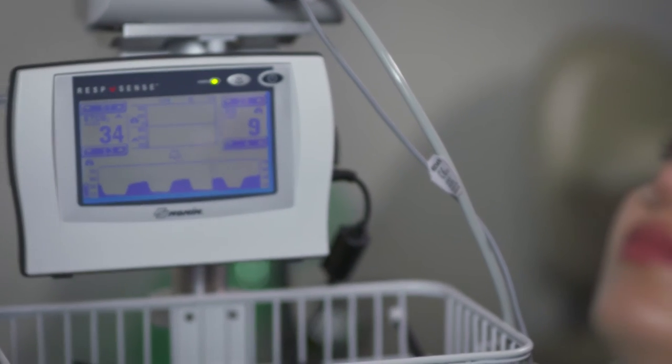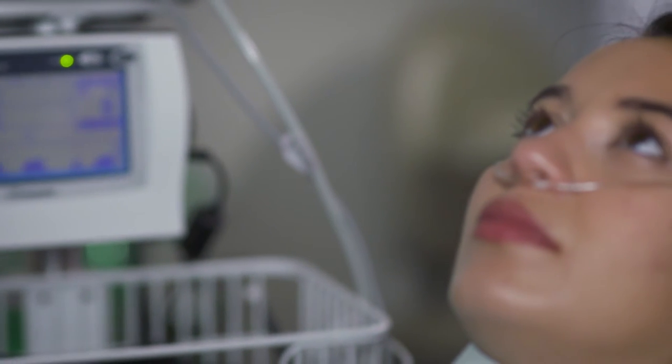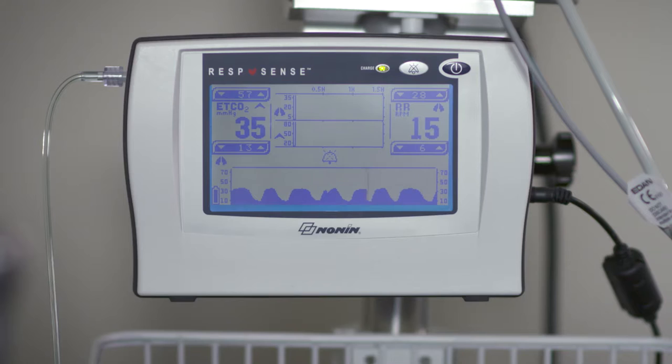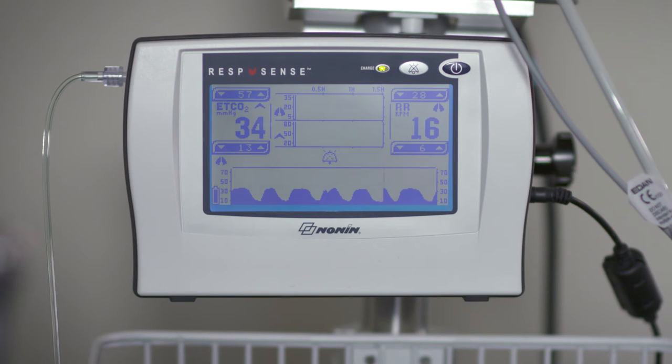Capnography works by sampling exhaled air through a small tube such as a cannula or a sample line during a procedure. The amount of CO2 in the exhaled breath is analyzed by the monitor and reflected in a waveform and numeric value that are displayed on the monitor or capnograph.